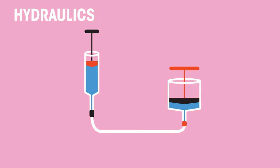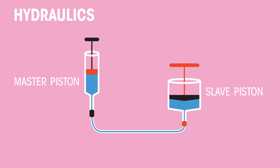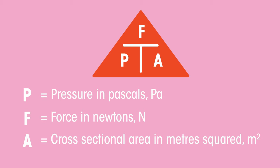Hydraulic systems consist of two pistons. A master piston, where pressure is applied, and a slave piston, which the pressure is transmitted to. Let's look at an example of how the system multiplies pressure. Remember, pressure is calculated using this equation.